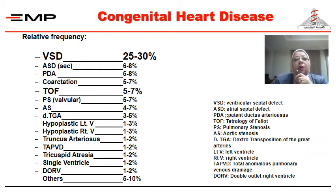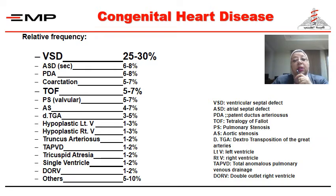The relative frequency of congenital heart diseases puts VSD at the top of the list. It is the most common in all studies. Not all studies give you the same percentages, but VSD is the most common acyanotic heart disease. And Tetralogy of Fallot is the most common cyanotic heart. Maybe in some studies they say transposition of the great arteries is as common, but Tetralogy of Fallot is the most commonly seen.